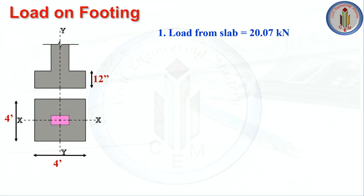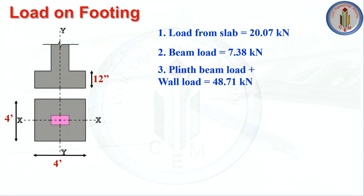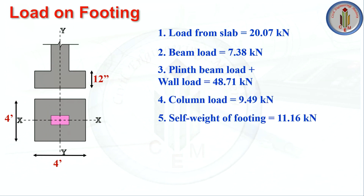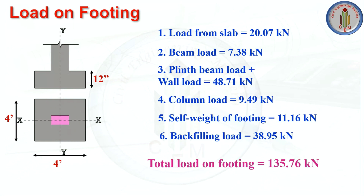Here is the summary of all loads: slab load = 20.07 kN, beam load = 7.38 kN, plinth beam plus wall load = 48.71 kN, column load = 9.49 kN, self-weight of footing = 11.16 kN, backfilling load = 38.95 kN. Total load on footing = 135.76 kN.